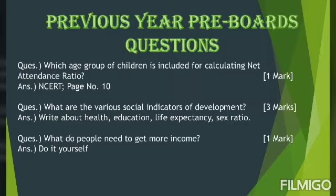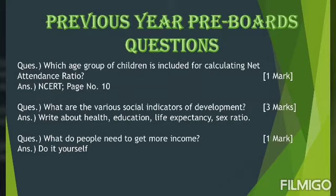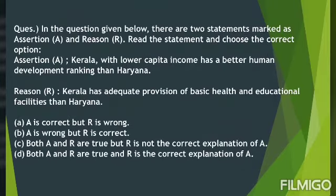Next question — again a one mark question: what do people need to get more income? Think the answer and write it yourself. Now, in your board's exam for one mark questions you will get different types — fill in the blanks, one sentence, one word, or MCQ. Apart from all these, you may also get assertion-reason type questions.